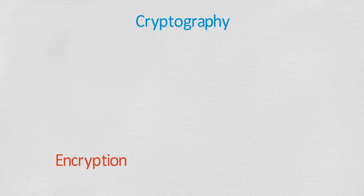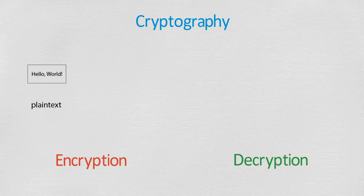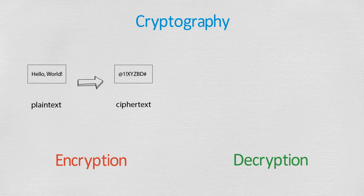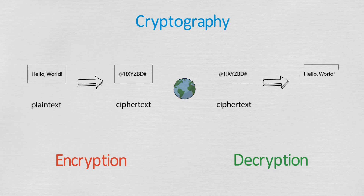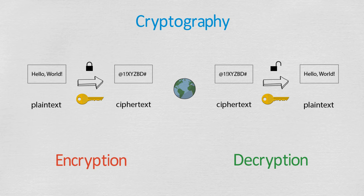Cryptography consists of two processes: encryption, or ciphering, and decryption, or deciphering. Ordinary information called plain text is encrypted into unintelligible information called ciphertext. This conversion from plain text to ciphertext and back is done using a specific set of information called a key — just like traditional locks have a physical key, in cryptography a key is used to encrypt and decrypt messages.